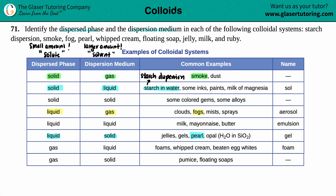Whipped cream is down here. For whipped cream, a small amount of gas — air — is being pumped into a liquid. So the dispersed phase is a gas and the dispersion medium is a liquid. Floating soap: a small amount of gas is put into a larger solid. Dispersed phase is a gas; dispersion medium is a solid.